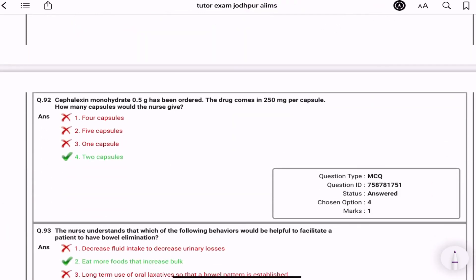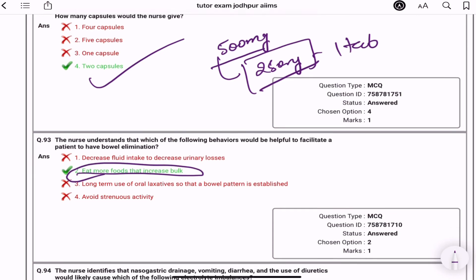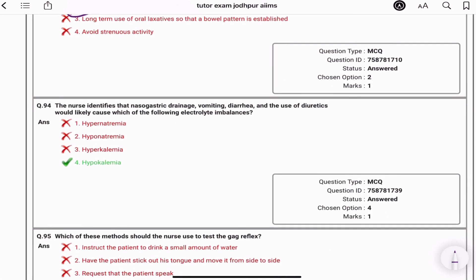Cephalexine monohydrate 0.5 mg has been ordered, drug coming in 250 mg per capsule. How many capsules? You can see 500 mg demanded, you have 250 mg. 250 mg a tab, so how many tablets do we have? Two. The nurse understand which of the following behavior would be helpful to facilitate your patient to have bowel elimination? Eat more food that increases bulk. The nurse identified NG drainage, vomiting, diarrhea, and use of diuretic would most likely cause which of the following electrolyte imbalance? Hypokalemia.